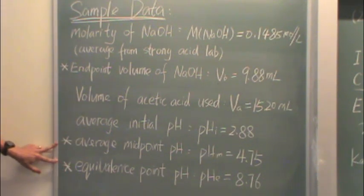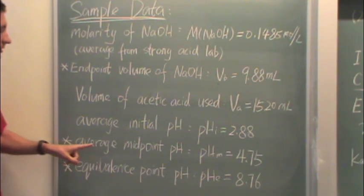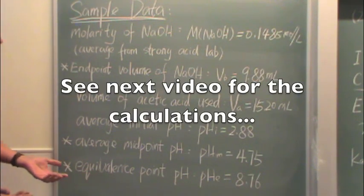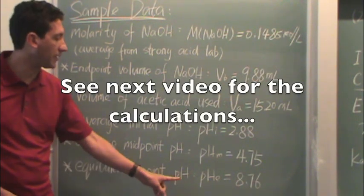And then you'll see the next two are starred. These two also will come from the tutorial. If you don't know where to get them, the tutorial can help you. So this is the average midpoint pH, which you'll need to know in order to do these calculations. And then the equivalence point pH.